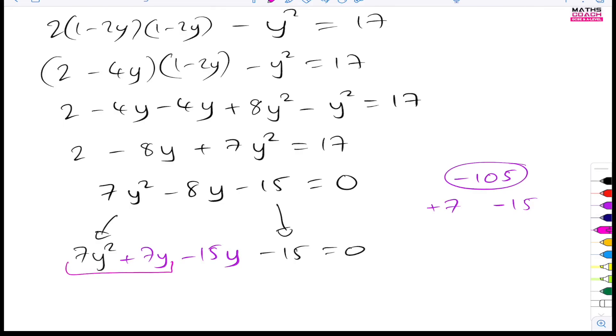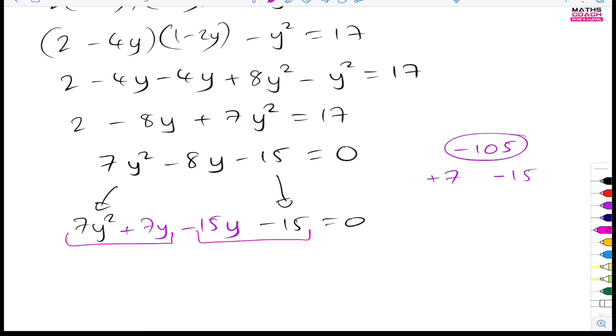Now, what do we do? We factorize these. So this will be factorized with a single bracket. And that gives us, if you take out the 7 and the y, we can do that. And inside the bracket, we'll have y plus one.